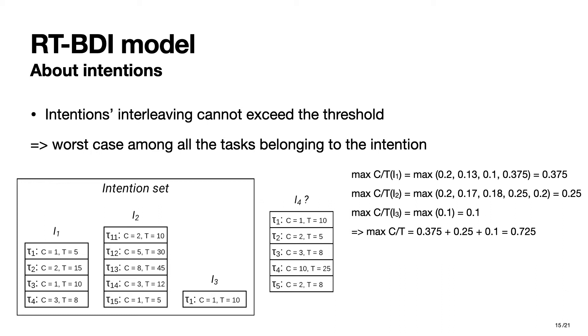When the agent has to evaluate if it has enough time and resources to execute a fourth intention together with the others, it performs the schedulability test, sees that the sum exceeds the threshold, and so it basically rejects the plan.